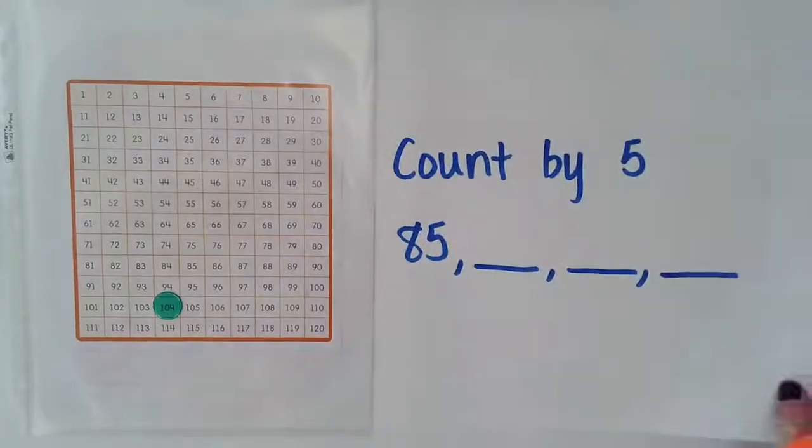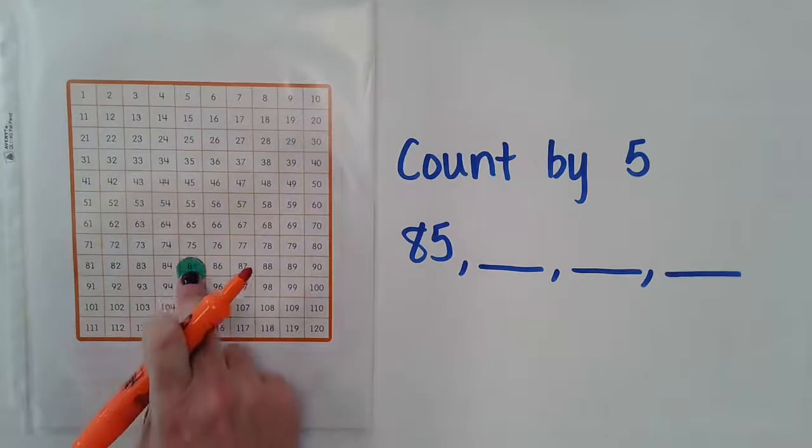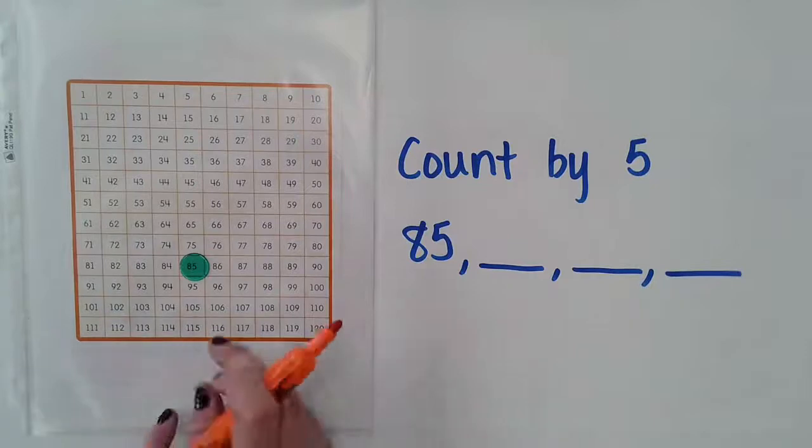So for our last activity here, we're going to be counting up by our fives. So this is a little bit more challenging, but I think we can do it. So I'm going to start at 85. I'm going to find my marker at 85, and I'm going to count up by fives to find five more than 85.